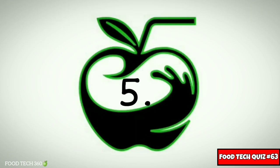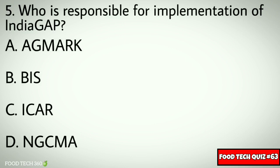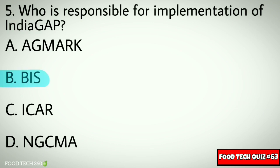Question No. 5. Who is responsible for implementation of India GAP? Options: A. Agmar, B. BIS, C. ICIR, D. NGCMA. Correct answer: B. BIS.